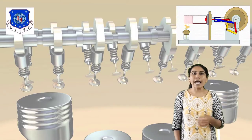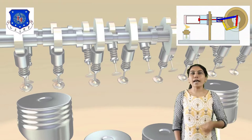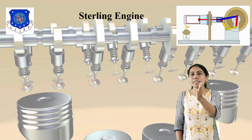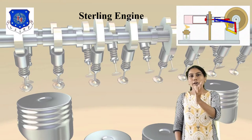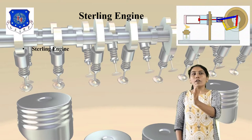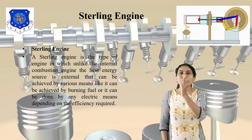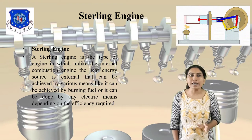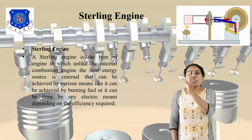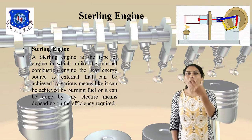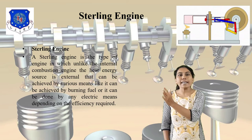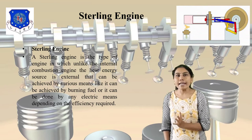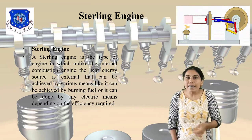First we discuss about the Stirling Engine. You can see the diagram of the Stirling Engine. This external heat means the fueling — the external heat source. The Stirling Engine is a type of engine which, unlike the internal combustion engine, has an external heat energy source. That can be achieved by various means — it can be achieved by fuel, or it can be done by electrical means, depending on the efficiency required.